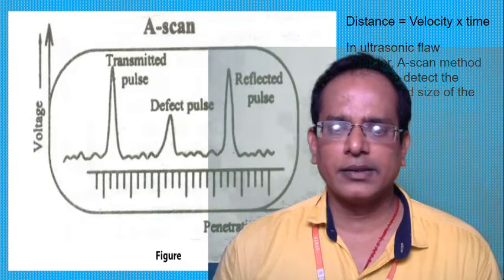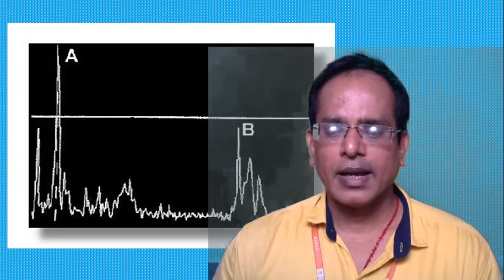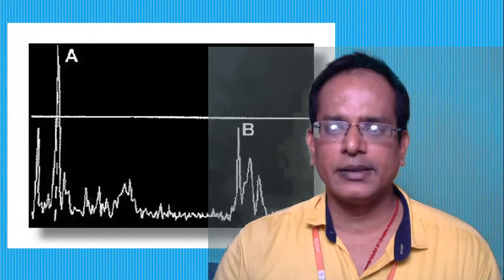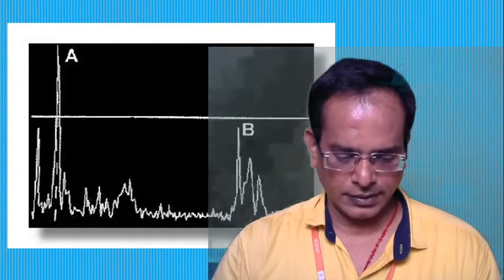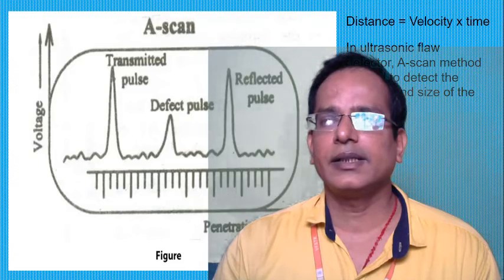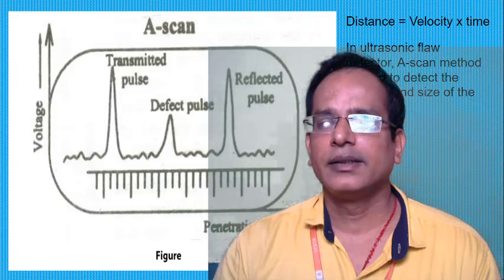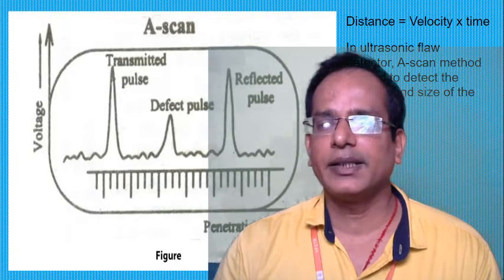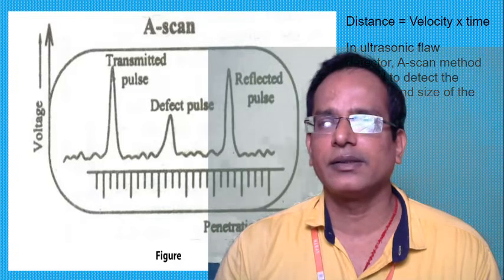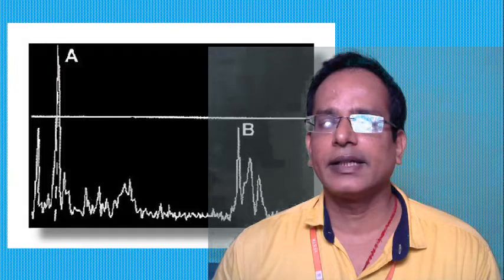The distance is calculated using the formula: distance equals velocity multiplied by time. The ultrasonic flaw detector A-scan method is used to detect the position and size of flaws — a flaw meaning any defective area.